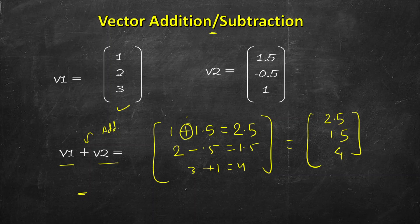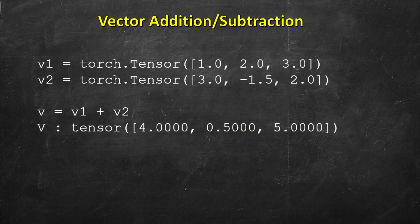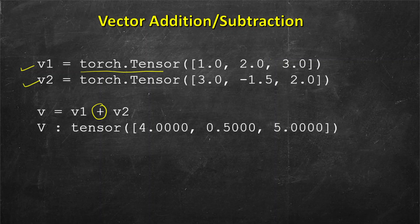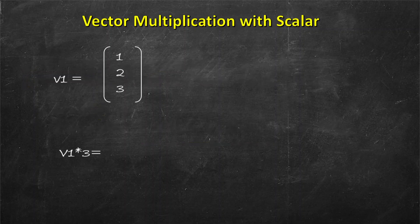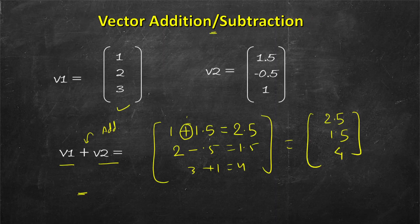Let's see how we can do it in PyTorch. We create two tensors using torch.tensor, pass the elements, and then simply write the plus symbol. You get a result as another tensor of the same dimension.